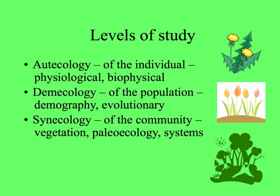Autecology is the ecology of the individual — physiological ecology, biophysics, and how individuals cope with stresses. Deme ecology is population ecology, including demography, evolutionary ecology, and prediction of persistence of rare species. And lastly, synecology — like synthesis — is the ecology of the community, which involves things at the level of vegetation, ecosystems, and even ecosystems and communities of the past in paleoecology.